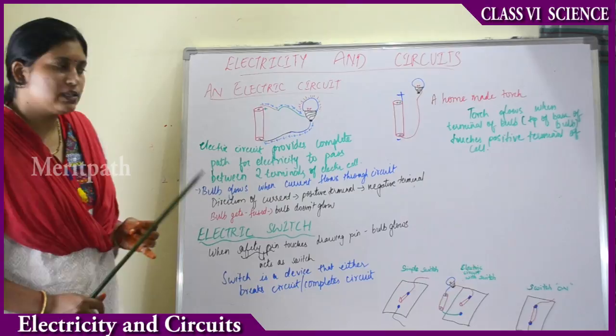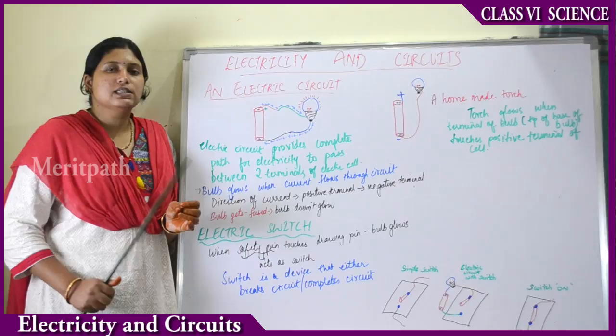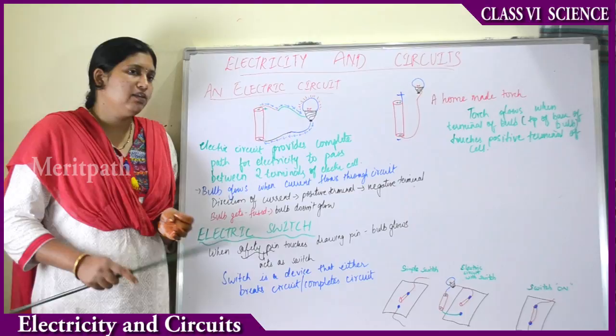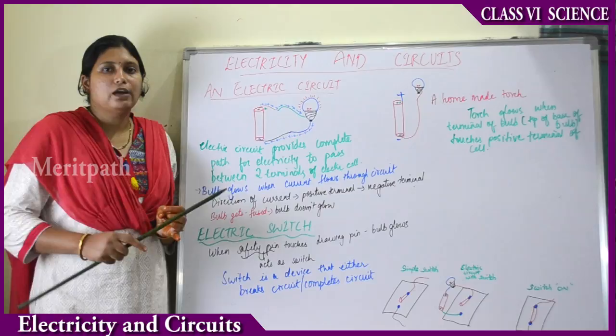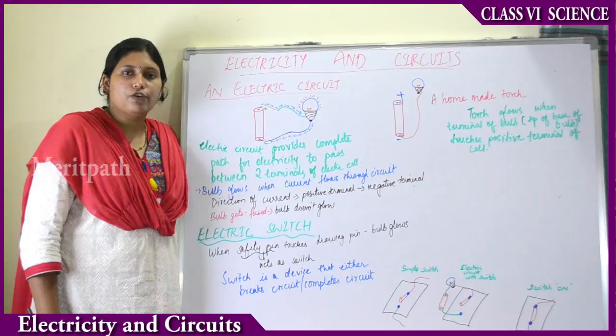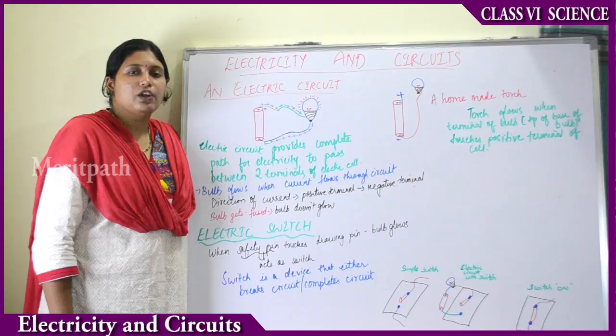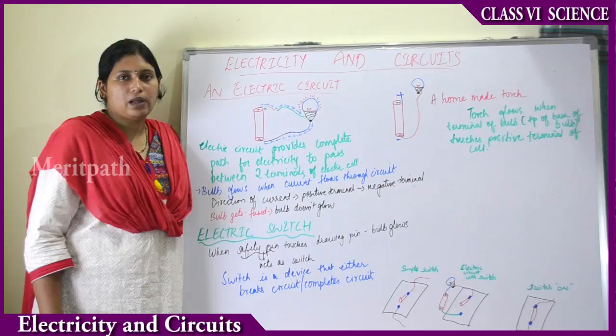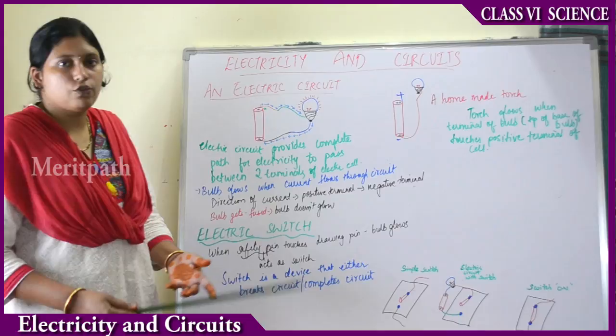Sometimes we observe that bulbs do not glow — we say the bulbs are fused. That means the filament, the thin wire part of the bulb, has burnt off. That is why even when there is a flow of electricity and the circuit completes, the bulb still doesn't glow, because the filament is worn off or spoiled. When the filament of the bulb is not working, the bulb doesn't glow even when electricity flows. At that stage we have to replace the bulb.